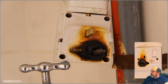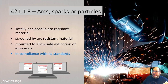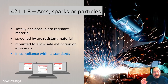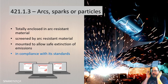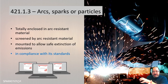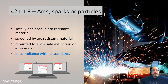Regulation 421.1.3: where arcs, sparks or particles at high temperature could be emitted by fixed equipment in normal service, the equipment shall meet one or more of the following. It will be totally enclosed in an arc-resistant material so the arc and particles can't escape, or screened by resistant material from materials upon which the emissions could have harmful effects, or mounted to allow safe extinction of the emissions at a sufficient distance from combustible materials, or in compliance with the product standard that accommodates this practice.